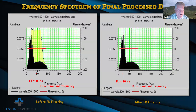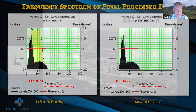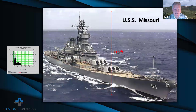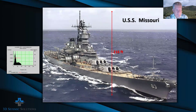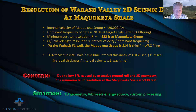If an interpretation cites details that cannot be seen by the data, the interpretation is unrealistic. So let me ask you a question: do you think that this 2D data is capable of detecting a World War II era battleship — for example, the USS Missouri — if she was buried at the same level as the Maquoketa Shale? The USS Missouri is 216 feet tall from its keel to the top of the mast. The vertical resolution of the data is determined by the seismic wavelength. The formula for calculating a wavelength is a function of the interval velocity of the zone, which is about 20,000 feet per second for the Maquoketa group, divided by the dominant frequency of the data, which is 20 Hz. The result of those calculations is a wavelength of about 1,000 feet.